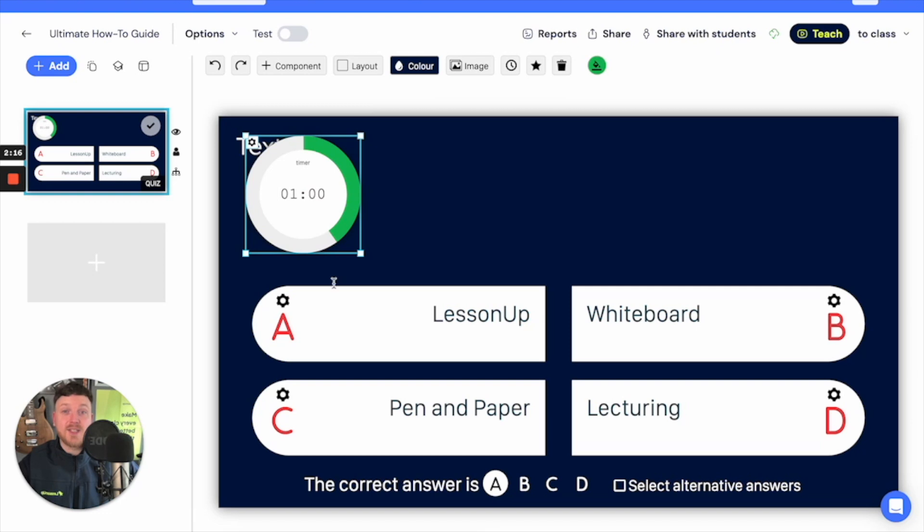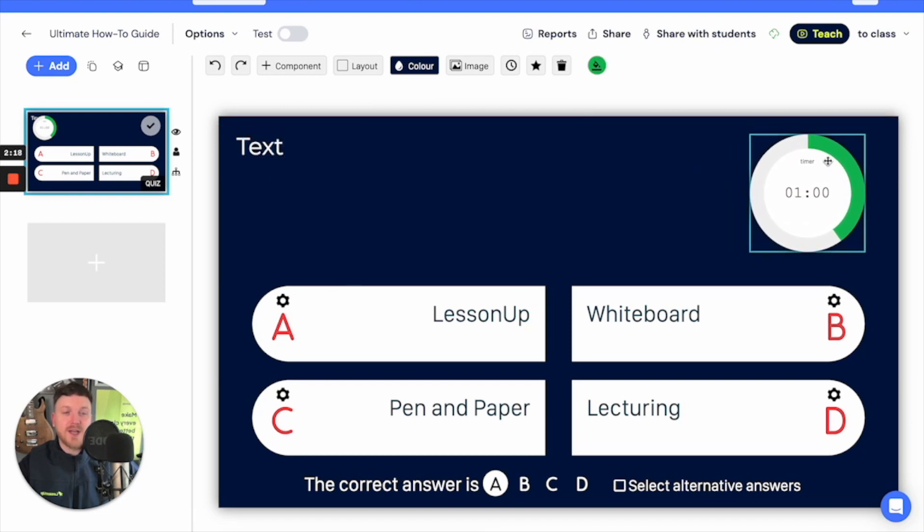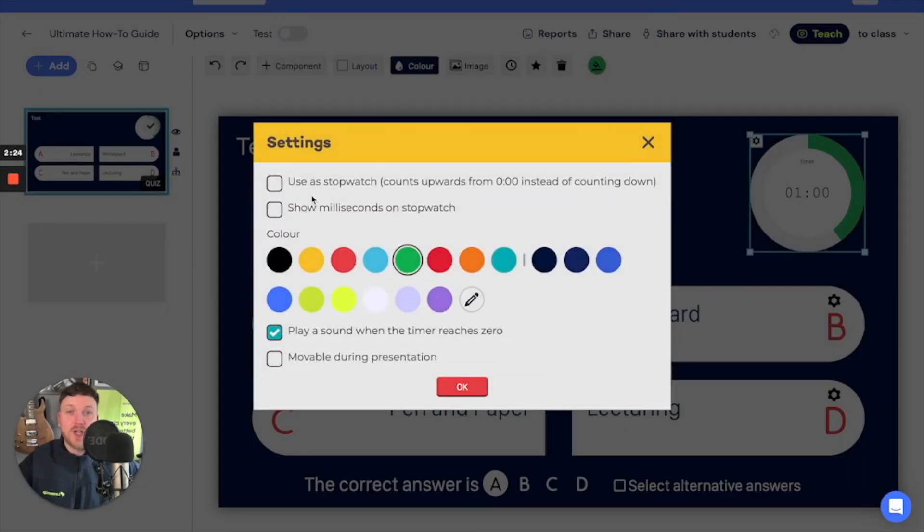I can also do things like add a timer if I'd like to make sure my students understand how much time they've got to answer each question. If I press the option here I can change how the timer functions so I can use it as a stopwatch. I can even count milliseconds if I'd like. That's something that's a little bit fun. You can even change the color of the countdown timer to match the style of your lessons or your school.